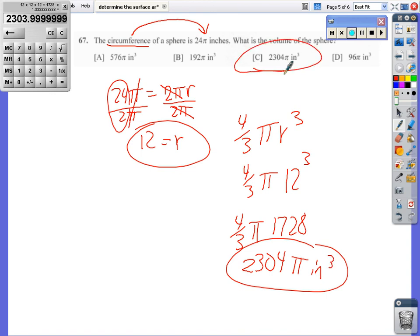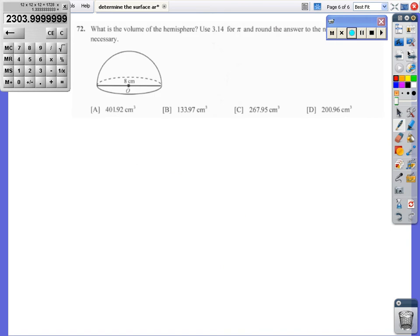Last one, hemisphere, so we're going to divide this one in 2. They're asking me to use 3.14 for pi. I actually don't like that because it's bigger numbers, but anyway, we're going to go with it. They give me a diameter. What am I going to do? I'm going to cut it in half to get the radius of 4. Don't forget that, so the radius is 4.